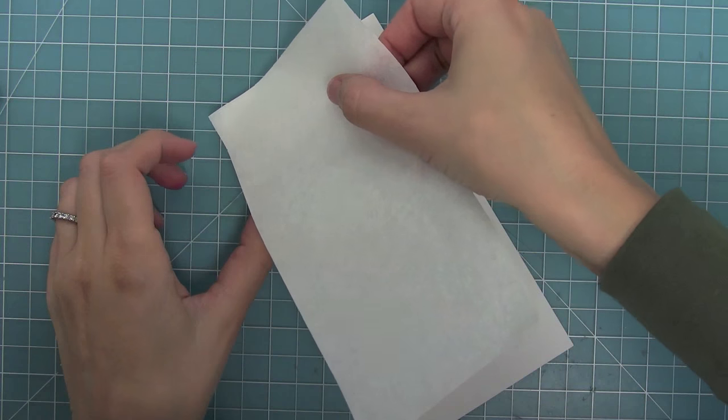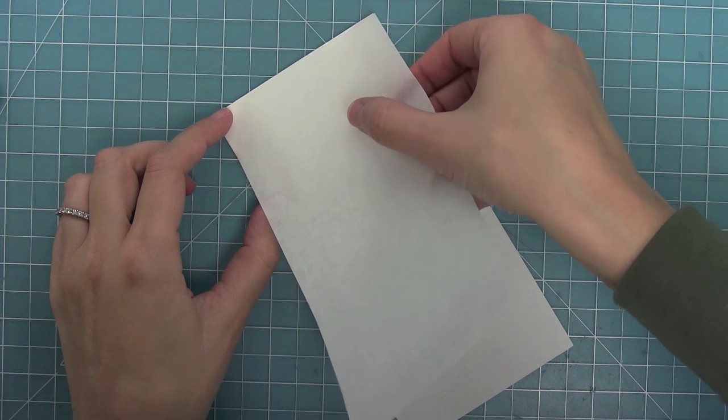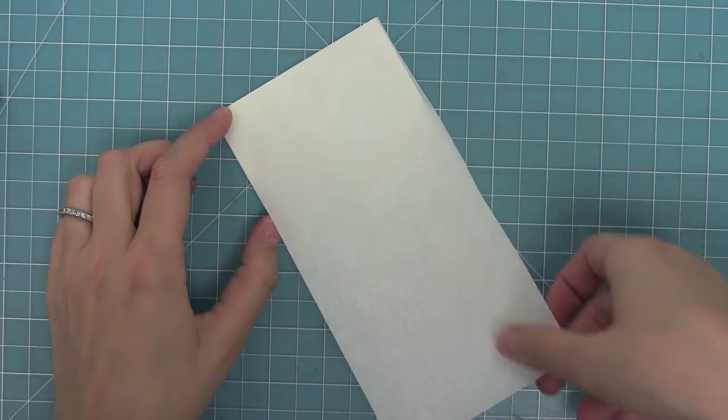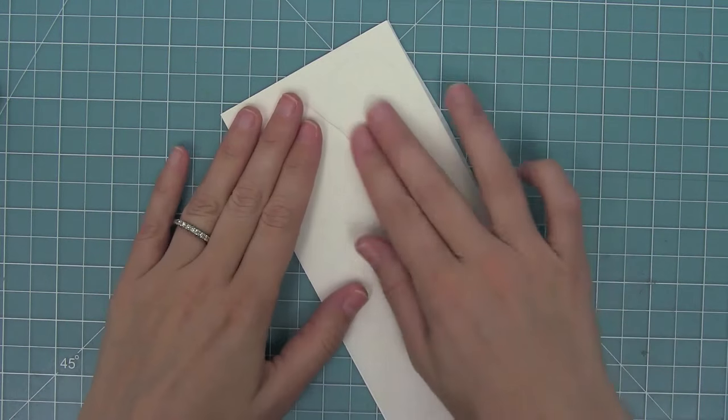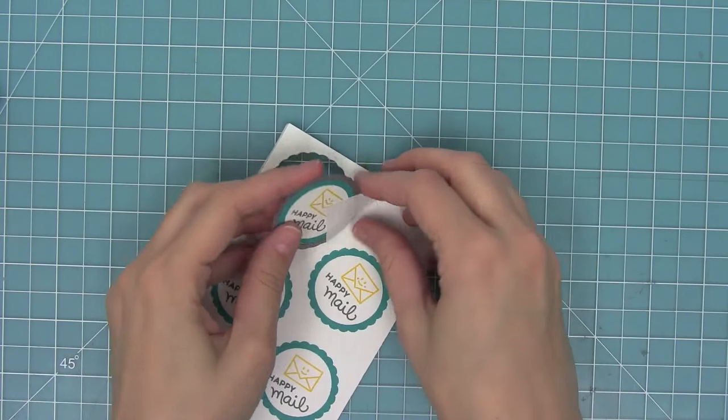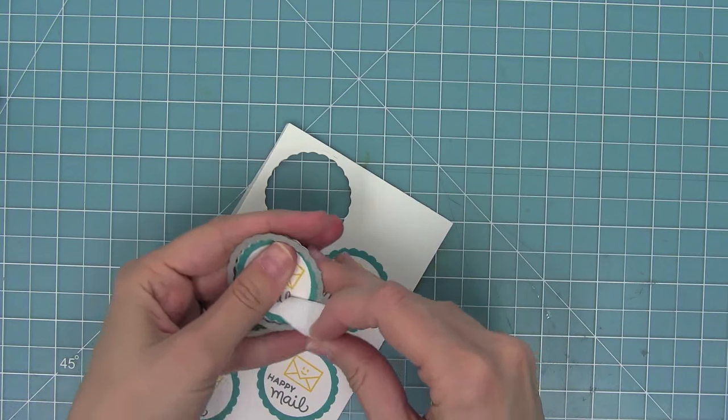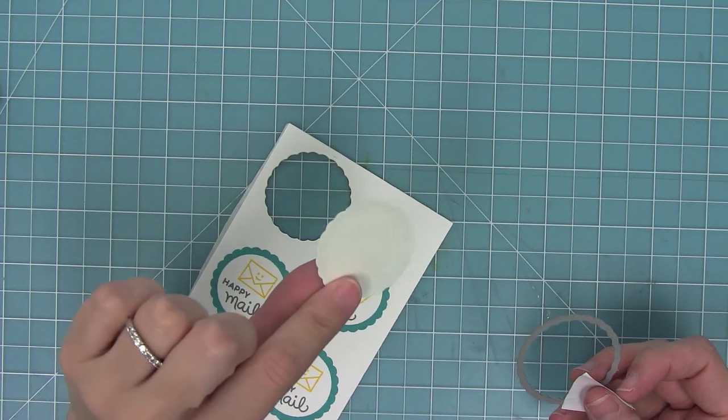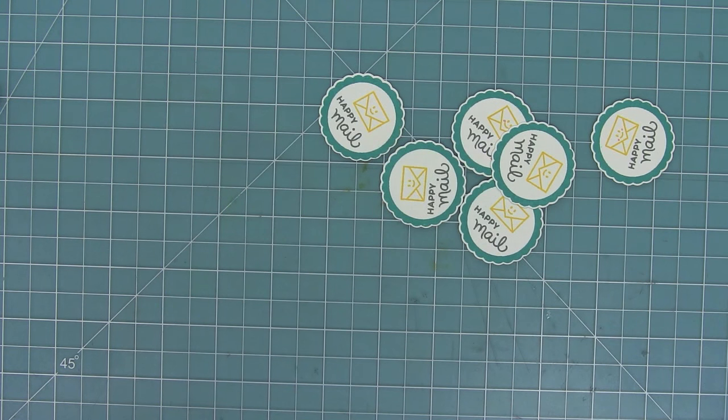So I'm going to cut it right to the size of this, peel off one side of the liner paper, and lay it down to the back of my piece of cardstock there that I stamped. I'm just going to press that down really well, and then I can go ahead and use the dies and die cut each of these, and now I've created my own personalized stickers that are ready to add to my envelopes, which I think is so fun.